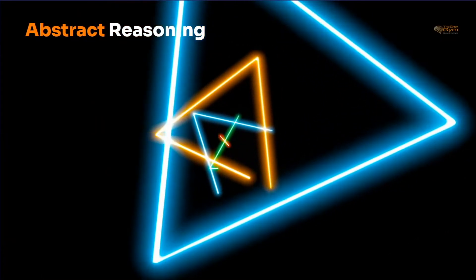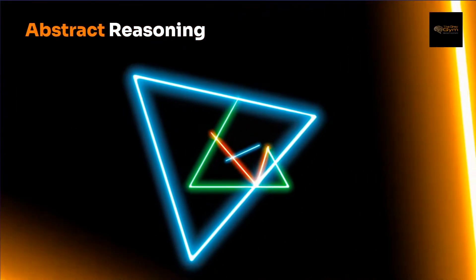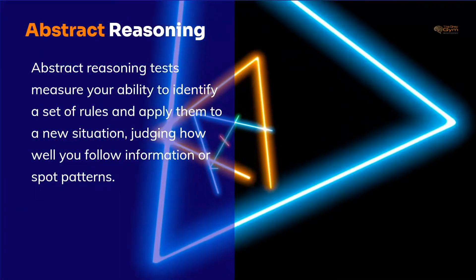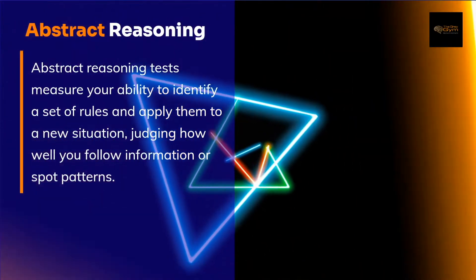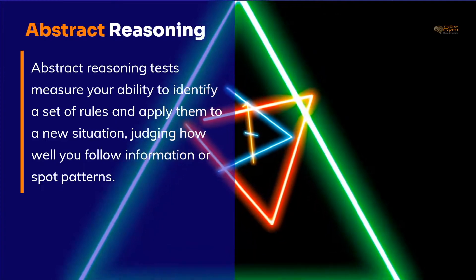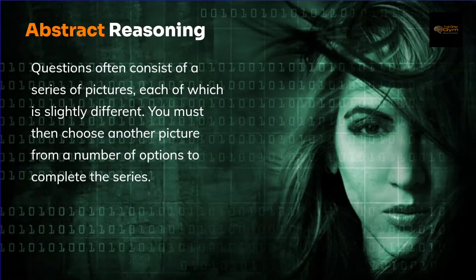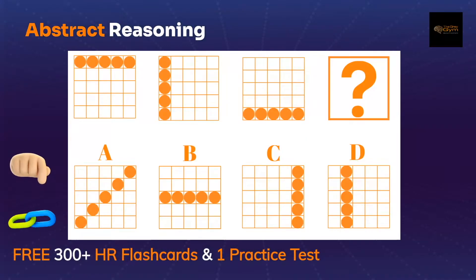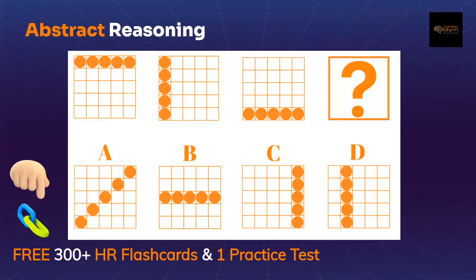Next, moving on to abstract reasoning — your chance to demonstrate your ability to learn new things quickly. Abstract reasoning tests measure your ability to identify a set of rules and apply them to a new situation, judging how well you follow information or spot patterns. Questions often consist of a series of pictures, each of which is slightly different. You must choose another picture from a number of options to complete the series. These tests are particularly common for IT, science and engineering roles. Let's look at the example now — here you see the entire grid and you have to pick the next option in the series.